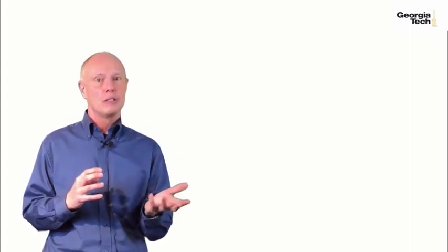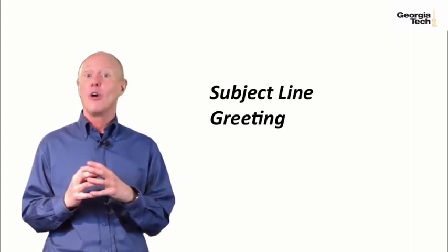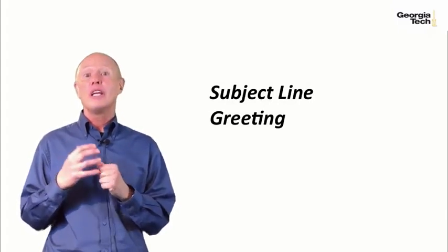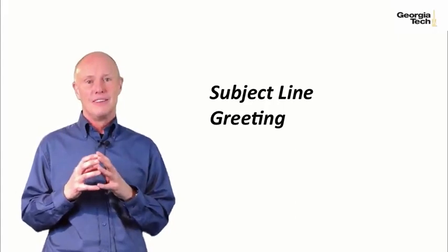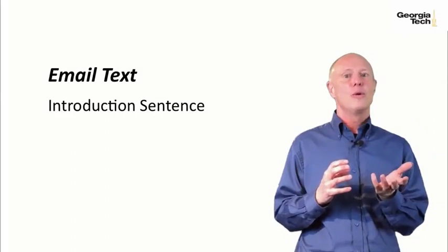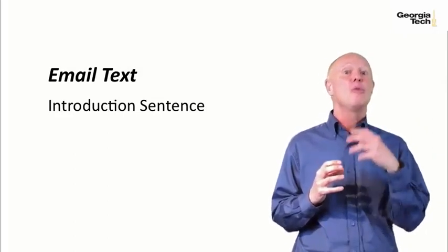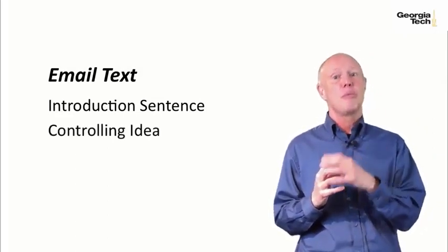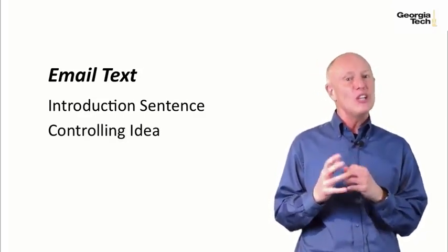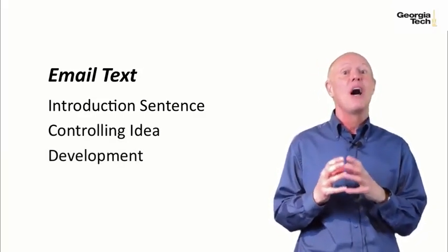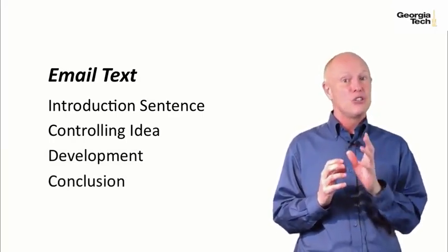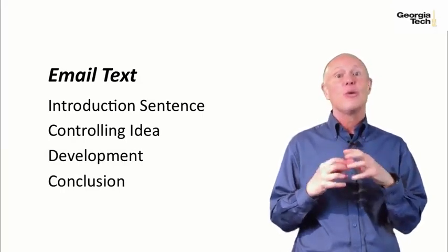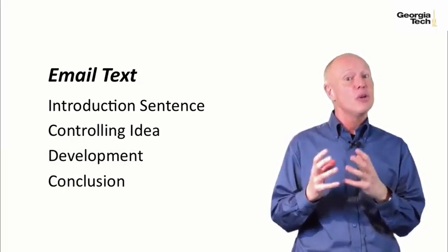As we've learned in previous lessons, our subject line and greeting are all pretty consistent. We do not include unnecessary information and we state a clear purpose in the subject line. For the email text, we start off with an introduction sentence which tells who the author is, followed by the controlling idea which states the purpose of the email in more detail. Next comes the development or main body of the email, and lastly we finish off with the conclusion and simple closing. I'm going to use this structure when giving you examples for how to write introduction and announcement emails.